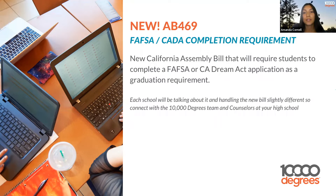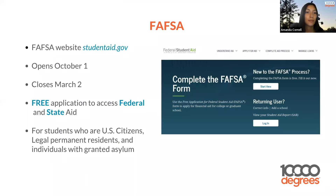A new assembly bill recently passed is AB 469. It requires that students complete a FAFSA or CADA application to graduate from high school. The FAFSA looks something like this when you log on to studentaid.gov. The FAFSA is a free application that allows you to access federal and state aid. It opens on October 1st and closes on March 2nd. The FAFSA is generally for students who are U.S. citizens, legal permanent residents, and individuals with granted asylum.